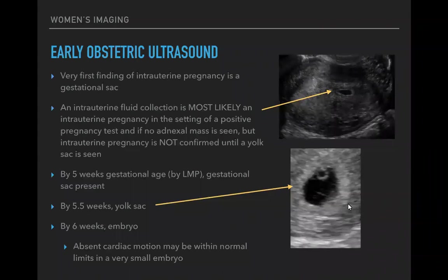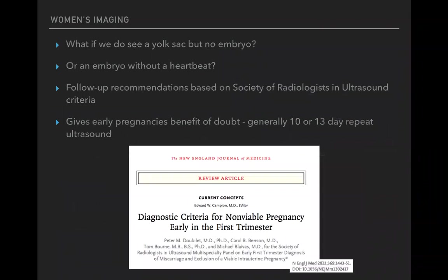If a yolk sac is seen but no embryo, or an embryo without a heartbeat, follow-up recommendations from the Society of Radiologists in Ultrasound give early pregnancies the benefit of the doubt — generally a 10 or 13 day repeat ultrasound depending on findings to establish viability. If the pregnancy test is positive and there is nothing in the uterus or adnexa, that is a pregnancy of unknown location requiring follow-up with serial hCG — it could be a very early intrauterine pregnancy, early ectopic, or failed pregnancy.